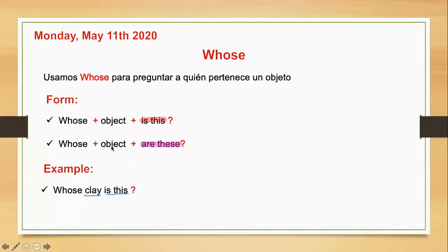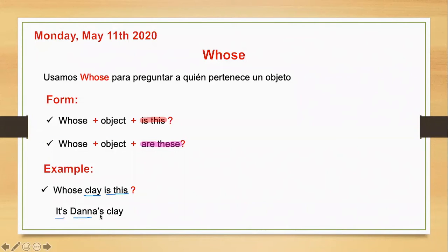And how do we answer this? ¿Cómo podemos responder esta pregunta? So we say: it's Dana's clay. Entonces vamos a colocar primero 'it's', luego el nombre de la persona a quien le pertenece más el posesivo sajón — apóstrofe S — para decir que esta persona es el poseedor, y luego el objeto que esa persona posee.